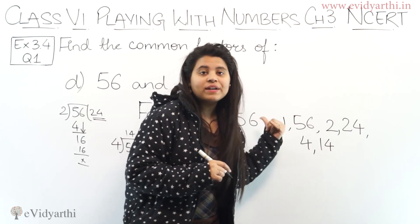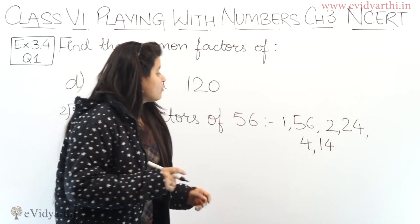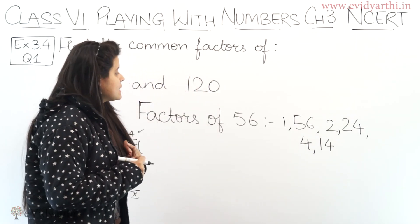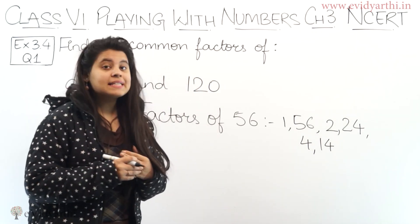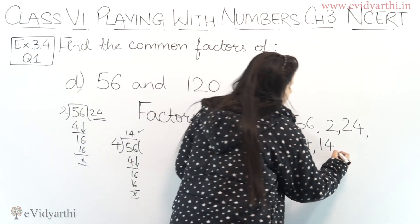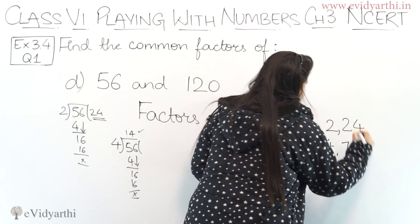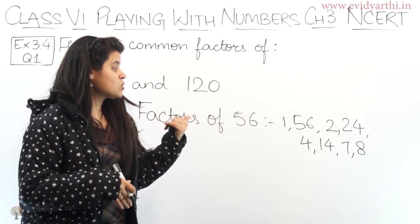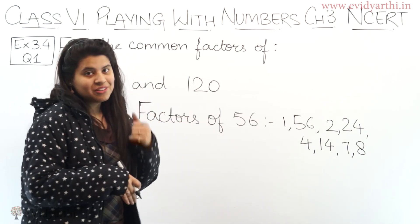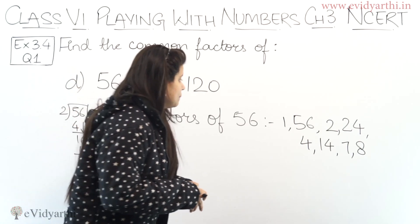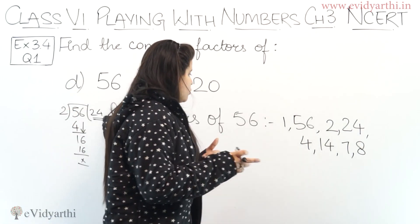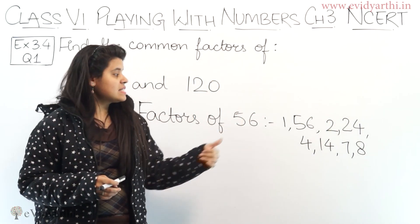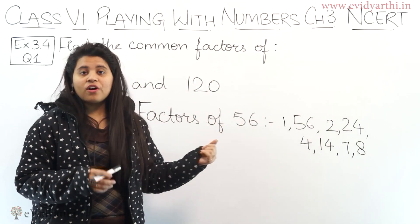We know 8 into 7 is 56, confirming both are factors. Checking 9: not a factor. 10, 11, 12, 13, 14 — we have already recorded 14. So the factors of 56 are: 1, 56, 2, 28, 4, 14, 7, and 8.